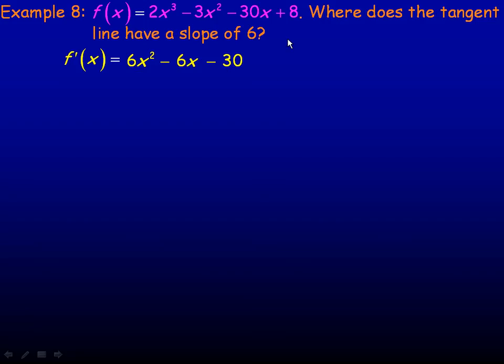And the 8, of course, is a constant, so its derivative would be 0. So if I want to know, for example, what the tangent line slope was where x was 2, I could put 2 in place of x and that would give me the slope of the tangent line where x is 2. We want instead to know where does the tangent line have a slope of 6. So what we would do is set this equal to 6. We're setting the derivative equal to 6.